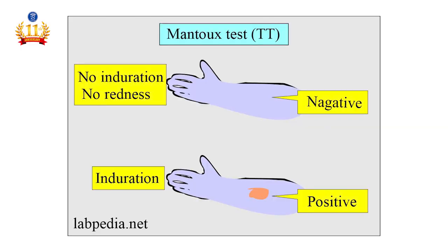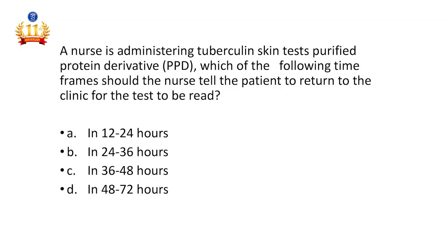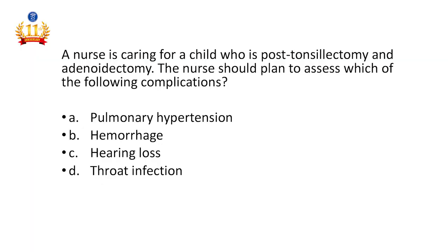For the TB test we use Mantoux test with PPD (purified protein derivative), given intradermally at 0.1 ml. After giving this injection, we tell the patient to come back to the clinic after 48 to 72 hours for the proper reading. At the injection site, if there is an induration, the Mantoux test is positive. If there is no induration, the test is negative.